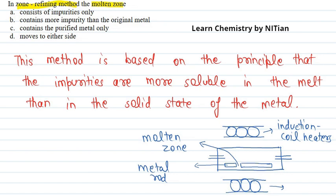If we look at the given options, option A says impurities are present only — this is not the case, as pure metal is also present. Option B says it contains more impurities than the original metal — this is correct, based on the principle that impurities are more soluble in the molten state than in the solid state. Option C says purified metal only — this is not correct, as impurities are present. Option D says it moves to either side — this is not correct, it moves in the forward direction. The correct answer is option B.